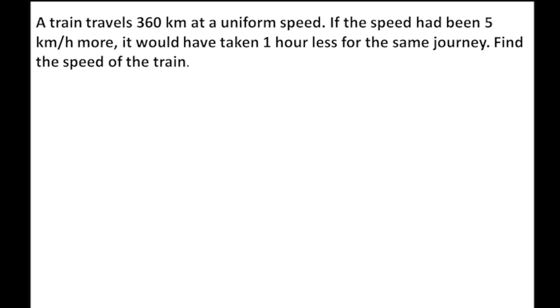Hi students, today we are discussing Class 10 Chapter 4 Exercise 4.3 Question Number 8, a word problem. A train travels 360 kilometers at a uniform speed. If the speed had been 5 kilometers per hour more, it would have taken 1 hour less for the same journey. Find the speed of the train.